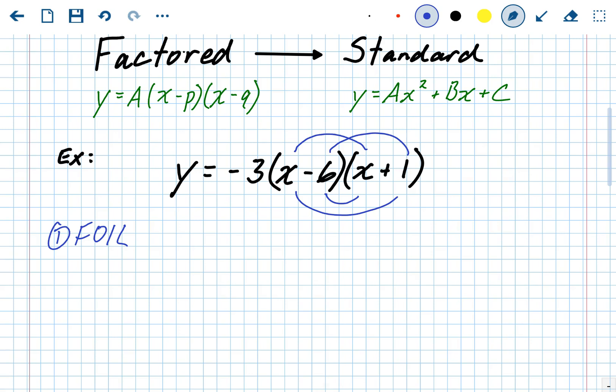And that's going to give us the negative 3, it's going to stay up front for now. X times X, X squared. Outside, X times 1 is 1X. Inside, negative 6 times X is negative 6X. And then last, negative 6 times 1 is negative 6.